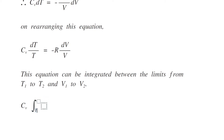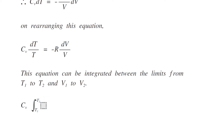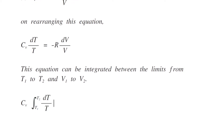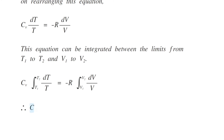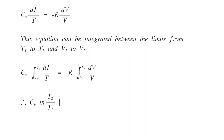This equation can be integrated between the limits T1 to T2 and V1 to V2. Therefore, CV times the integral of dT by T from T1 to T2 is equal to minus R times the integral of dV by V from V1 to V2. Therefore, CV ln(T2/T1) is equal to minus R ln(V2/V1), or R ln(V1/V2).